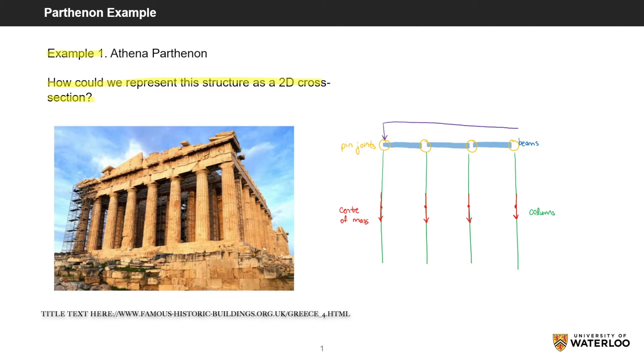Lastly, we will show how the load of the roof structure and beams is distributed evenly across the width of the structure and supported by the columns.